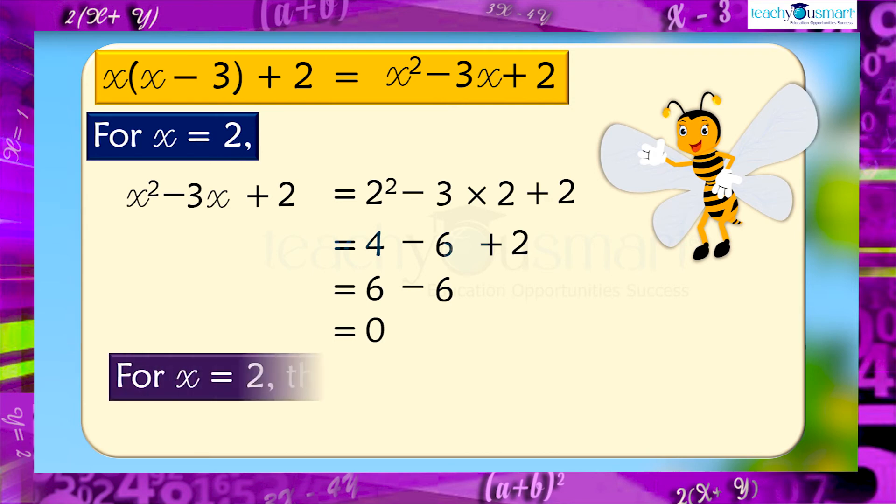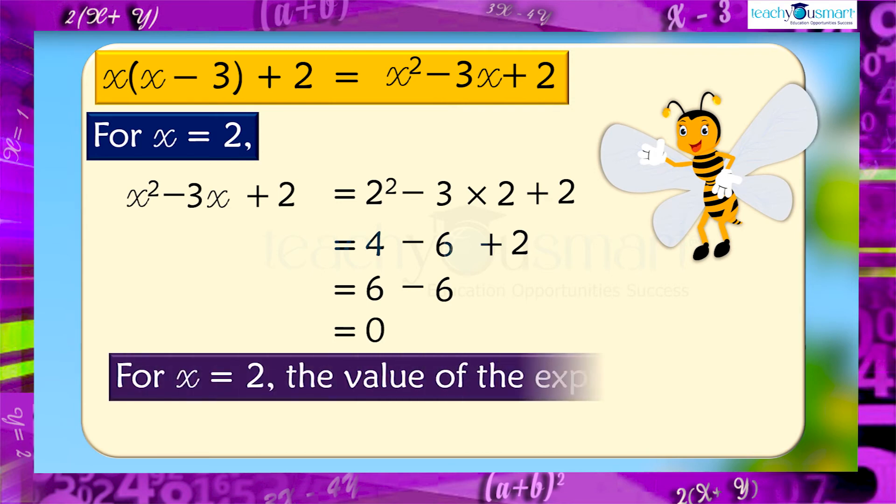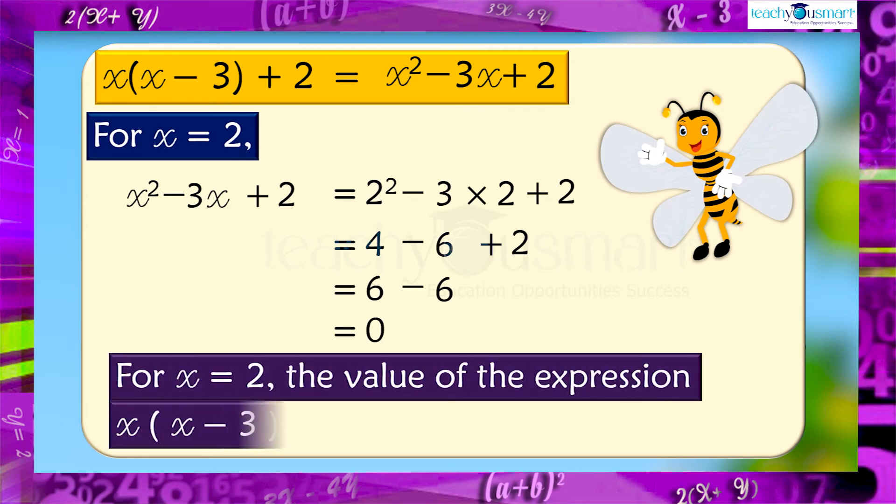For x equals 2, the value of the expression x multiplied by x minus 3, plus 2, is 0.